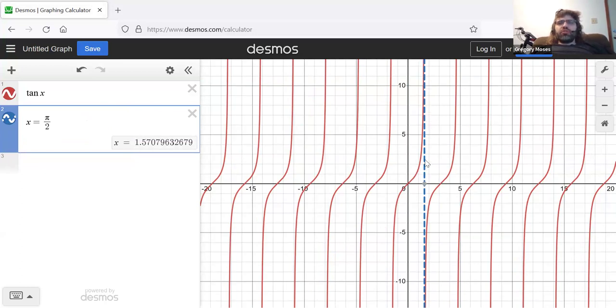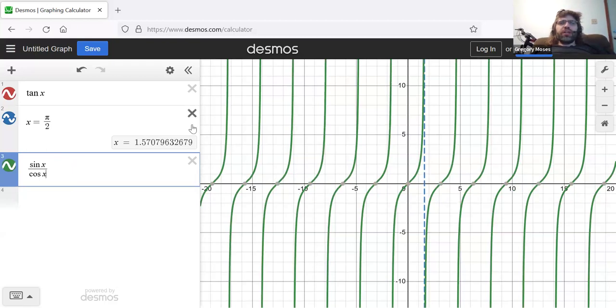Vertical asymptotes occur when we have division by zero errors. You might remember that from algebra and looking at rational functions. The tangent is a fraction. The tangent is the sine divided by the cosine.